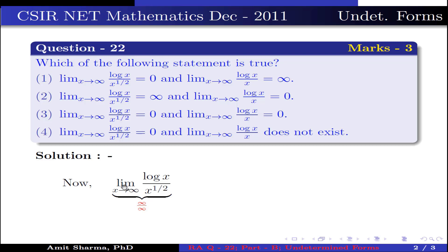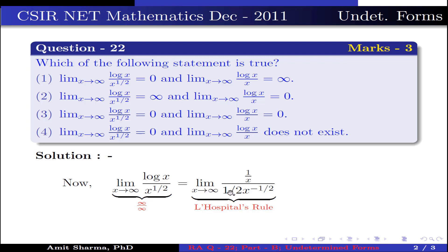Now, limit x approaches to infinity of log x divided by x to the power half. If we substitute the limit we get the infinity by infinity form, which is further written as limit x approaches to infinity of 1/x divided by half times x to the power minus half, by using L'Hôpital's rule. Here 1/x is the derivative of log x, and this is the derivative of x to the power 1/2, which is further simplified as limit x approaches to infinity of 2 divided by x to the power half.